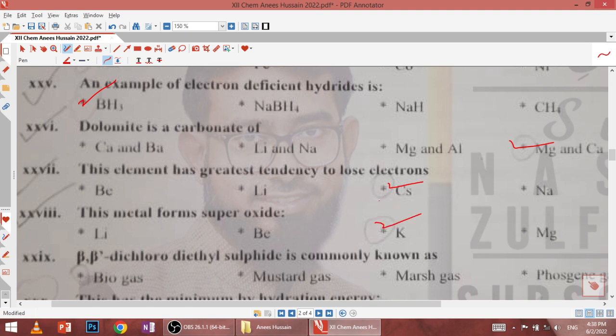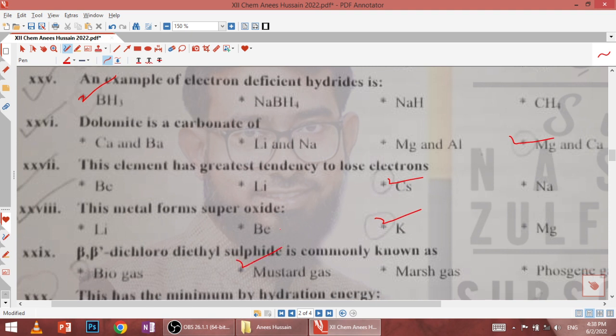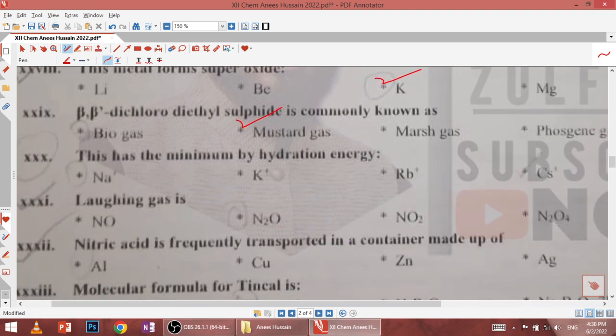Twenty-seventh, this element has the greatest tendency to lose electron, this is cesium. Twenty-eighth, this metal forms superoxide, potassium. Twenty-ninth, beta-beta-dichlorodiethyl sulfide is commonly known as mustard gas. Thirtieth, minimum hydration energy is of cesium because it has the largest atomic size.